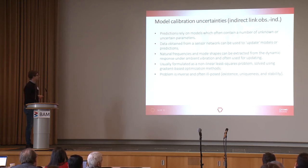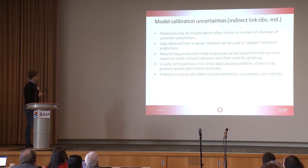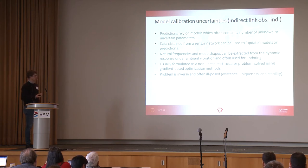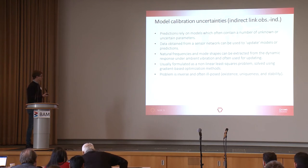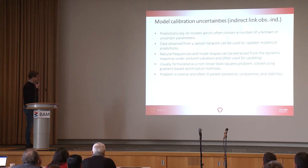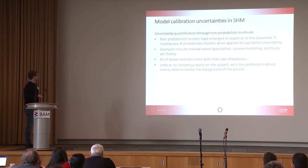The idea is that information or observations collected from a sensor network can help us update a model of the system and also the predictions we make. In the field, natural frequencies and mode shapes are often used for updating or calibrating models, simply because they can be extracted from the structure while it's in operation — what we have as excitation under ambient vibrations is sufficient for identifying those. This model calibration is usually done by solving a nonlinear least-squares problem using optimization methods. It's important to note that it's an inverse problem and often ill-posed, which means that uncertainties will have a big effect on this process.